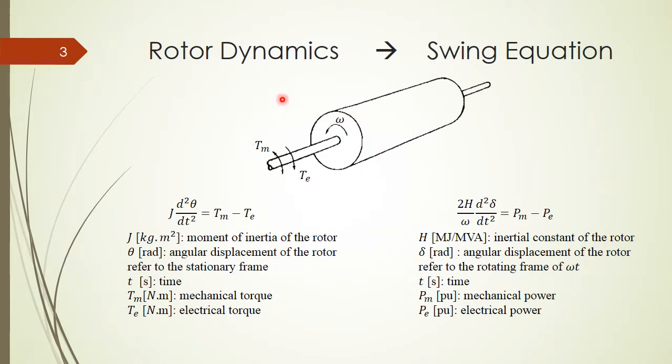First, we look at the behavior of a generator. For example, this generator rotates with angular speed omega, and the mechanical torque applied to it is T_m in the same direction with omega. The winding of the rotor will generate an electrical torque in the reverse direction. Here is the equation showing the relation between the movement of the rotor and the torque applied to it. J here is the moment of inertia of the rotor. Zeta is the angular displacement of the rotor referred to a stationary frame which doesn't move, and t here is the time. If we convert this one to a new form, we can rewrite it as this formula.